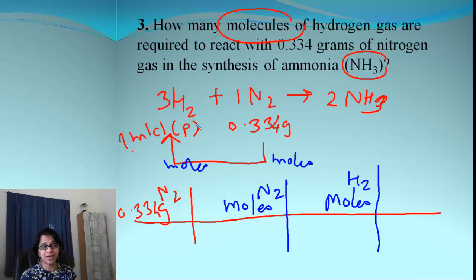So moles of N2. We go from there to moles of hydrogen. And now, look carefully. We are going to go to particles or molecules of hydrogen. So here comes grams of N2. This is moles of N2.